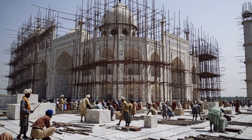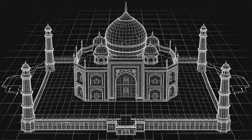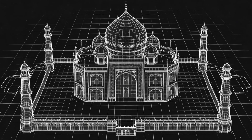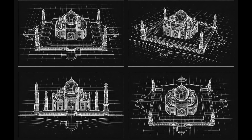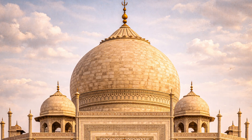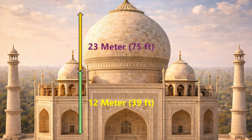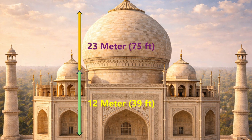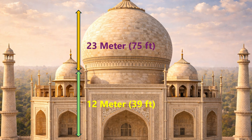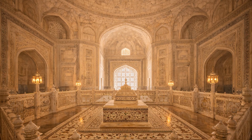Only after this strong base was ready did construction of the main tomb begin. At the center of the complex stands the mausoleum, made of white marble and sitting on a square base. Each side of the building is equal, every line is balanced, and this perfect symmetry gives the Taj Mahal its calm and peaceful beauty. The most important feature is its great marble dome, 23 meters high, sitting on a tall circular base and rising like the sky above the tomb — representing heaven.